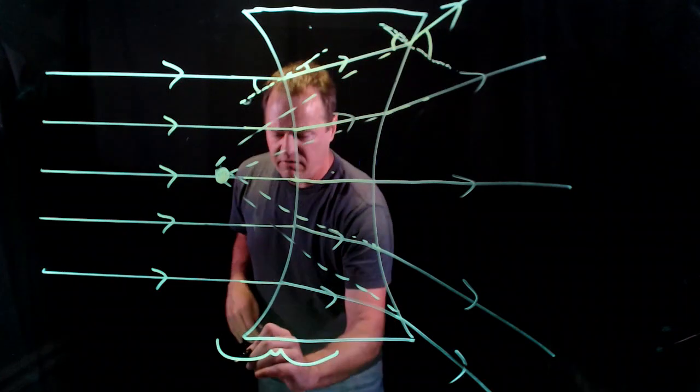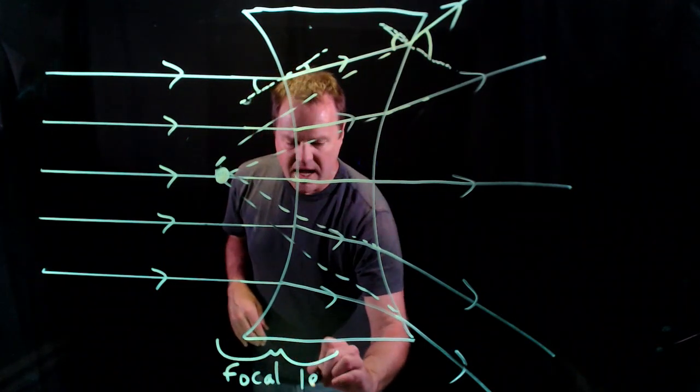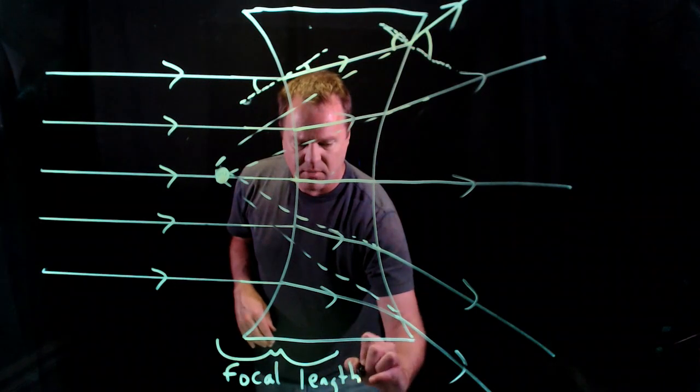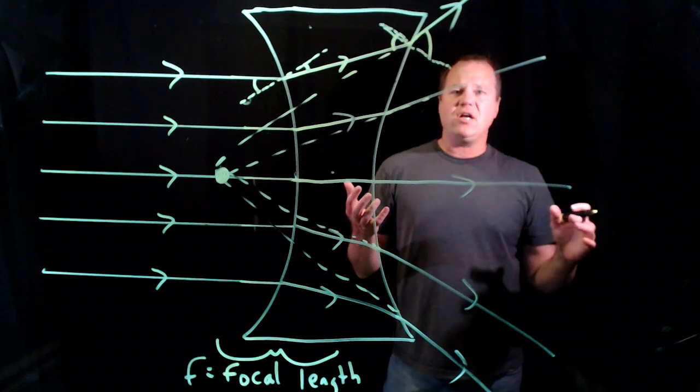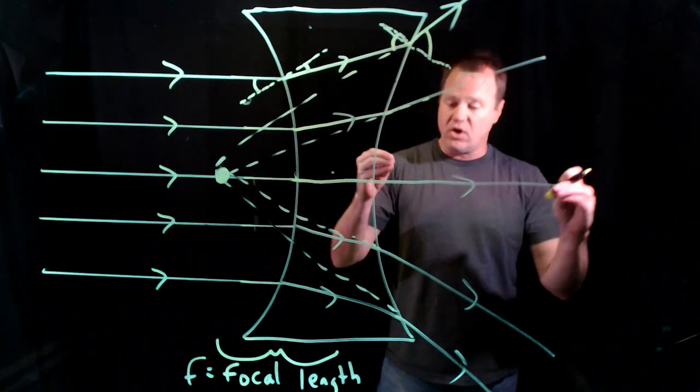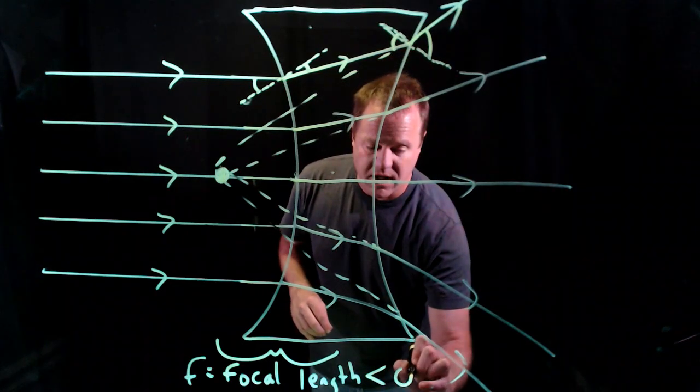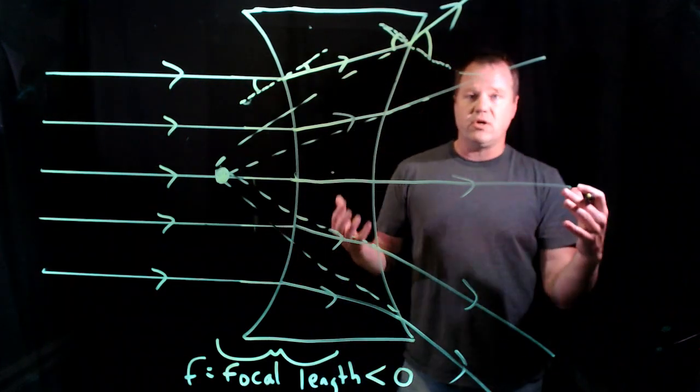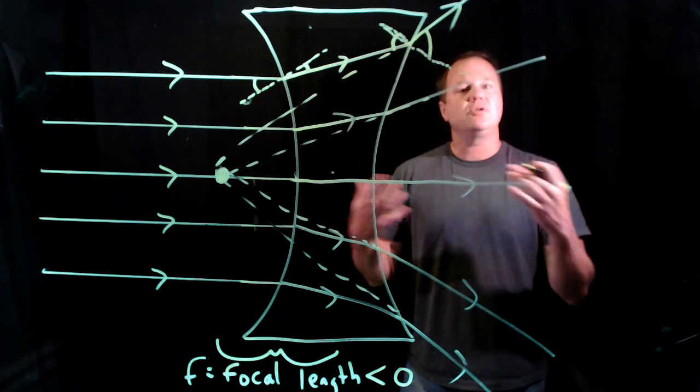To distinguish this mathematically from a biconvex converging lens, we define that to be a negative focal length, and that's what we throw into the formulas that are associated with these types of lenses.